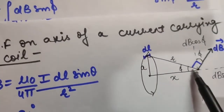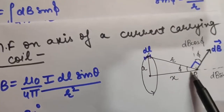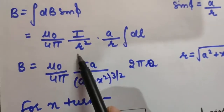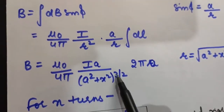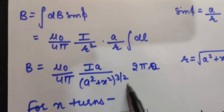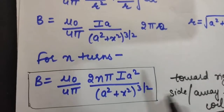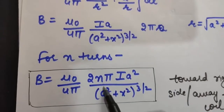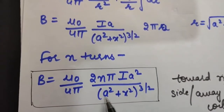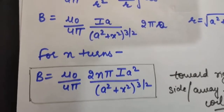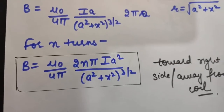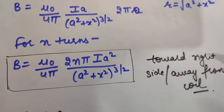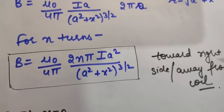Using Pythagoras theorem, R = √(A² + x²), so R cubed = (A² + x²)^(3/2). The value of magnetic field is B = (μ₀/4π) × (2NπIA²) / (A² + x²)^(3/2). This is in the direction of DB sin φ, so we can say it is towards the right side or away from the coil. Now we will discuss some special cases.